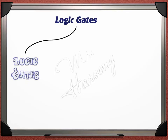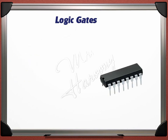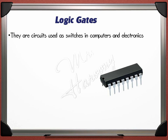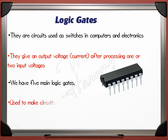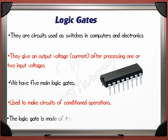The first part of the lecture is: what are logic gates? This picture shows what a logic gate looks like. They are circuits used as switches in computers and electronics. They give an output voltage or current after processing one or two input voltages. We will study five main logic gates in our syllabus, used to make circuits for conditional operations. A logic gate is made of transistors and resistors.